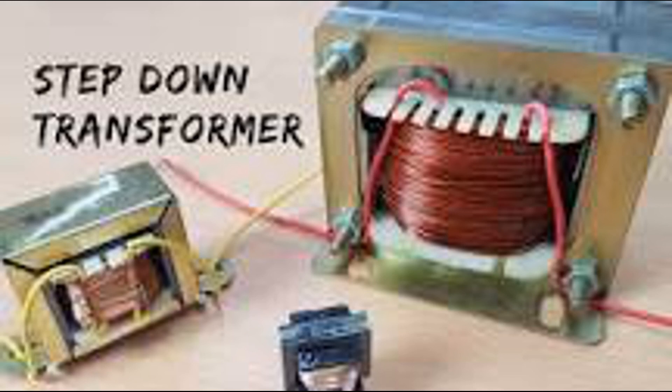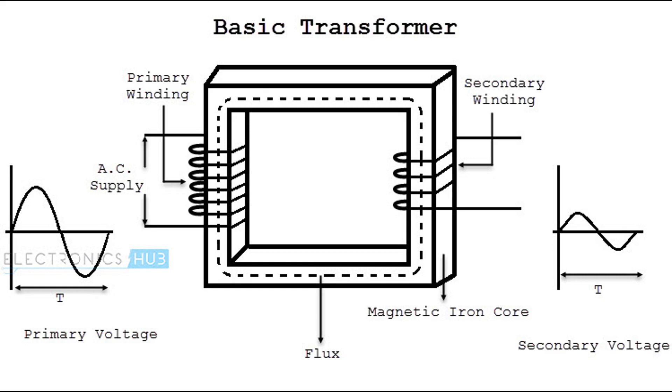In industrial applications, high voltage levels are required for specific operations, and step-up transformers can provide the necessary voltage boost. It is important to note that step-up transformers are only suitable for increasing voltage levels in AC systems and are not used for DC voltage conversion. Additionally, while they increase voltage, they proportionally decrease the current in the secondary coil to maintain energy conservation. Transformers operate with high efficiency, making them vital components in power systems and electrical devices.